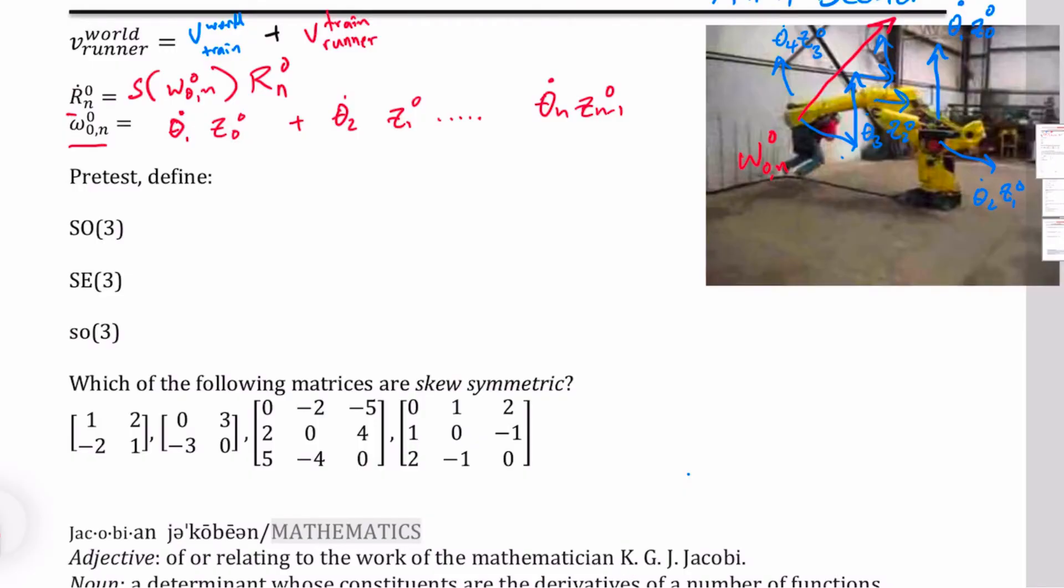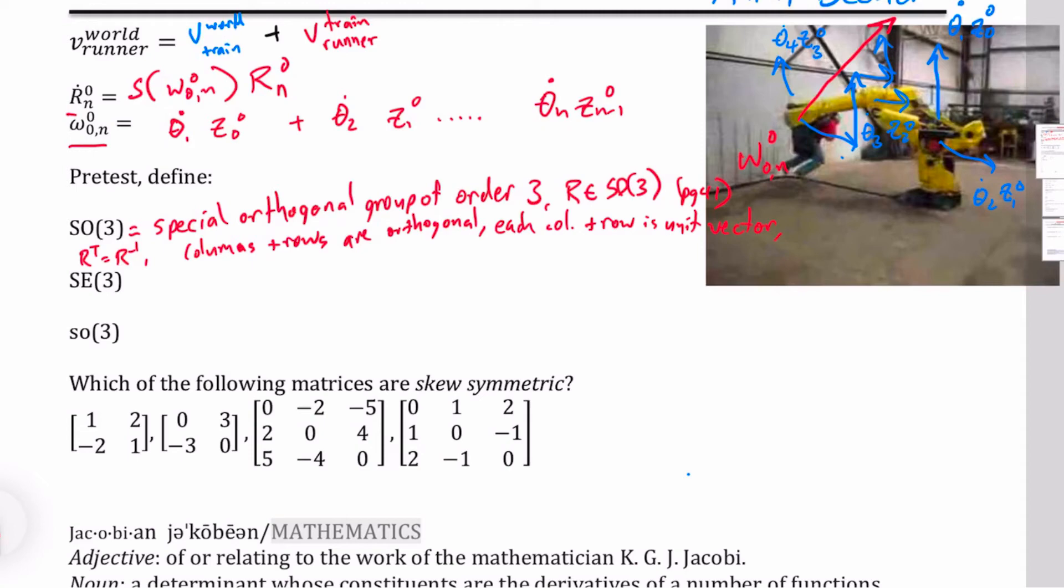So let's see how well you did. So this first one, SO(3), that stands for special orthogonal group of order three. We represent rotation matrices as SO(3). A rotation matrix is in SO(3). And we've got all sorts of wonderful properties. You can find them on page 41. The transpose of it is equal to its inverse. That's a wonderful property. Columns and rows are orthogonal. And each column and row is a unit vector. And then finally, that the determinant of R is equal to one. So it's a right-handed frame.